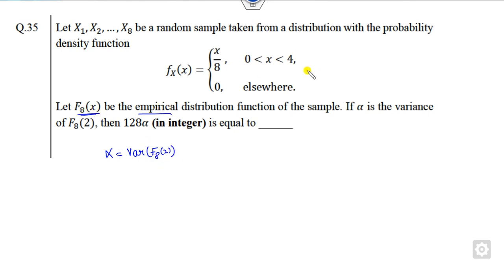Whenever there is a question related to empirical distribution, try to write the CDF first. You can see whenever x is less than 0, whenever x lies between 0 to 4, whenever x is greater than 4. The last value is always 1, the first value always 0.